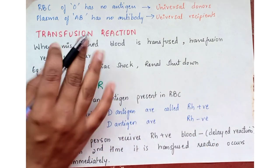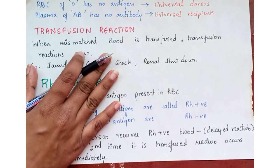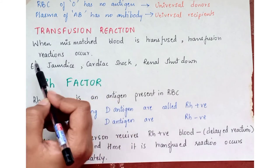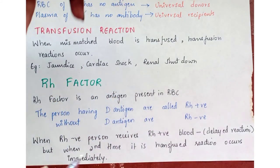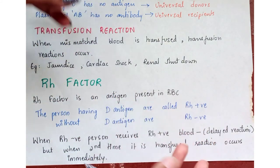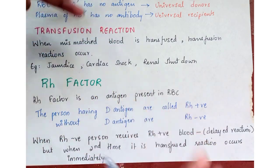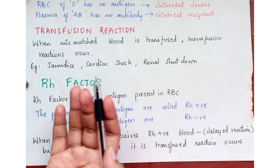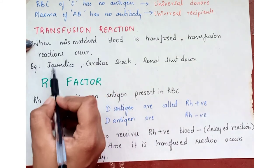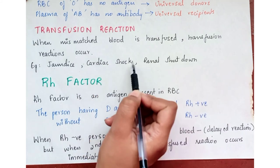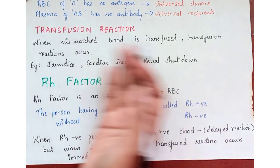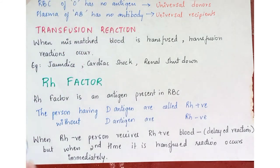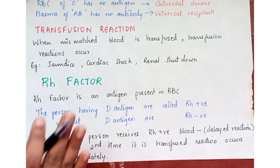When mismatched blood is transfused, a transfusion reaction occurs. If blood is transfused without checking blood groups and there is a corresponding antibody present, it leads to very aggressive reactions such as jaundice, cardiac shock, and renal shutdown.